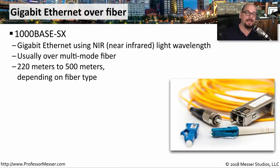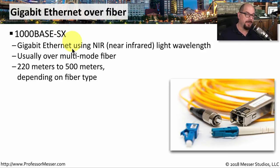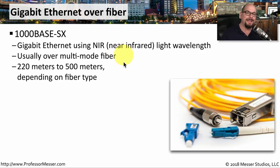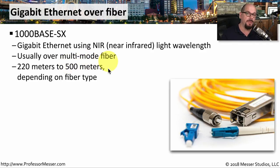If you need to run Ethernet past that 100 meter limitation for copper cabling, then you'll probably want to connect equipment using fiber. There are gigabit Ethernet standards for fiber optics. One of these standards is 1,000BaseSX, which is gigabit Ethernet running at 1,000 megabits per second using NIR, or Near Infrared Light Bandwidth. This standard commonly uses multi-mode fiber as its physical medium, so we can extend this Ethernet connection generally 220 to about 500 meters in length, depending on the type of fiber used.